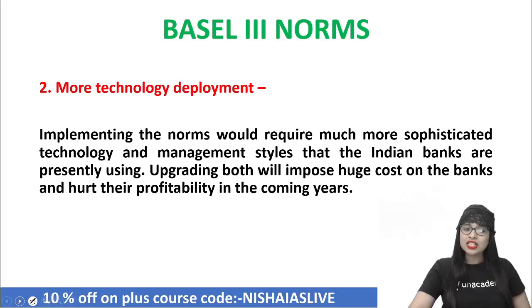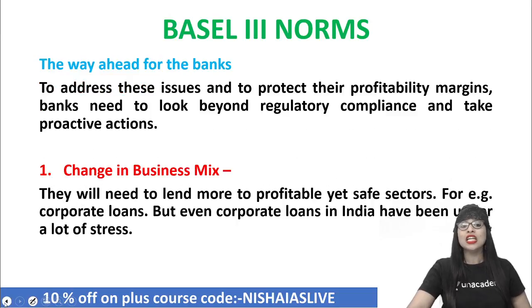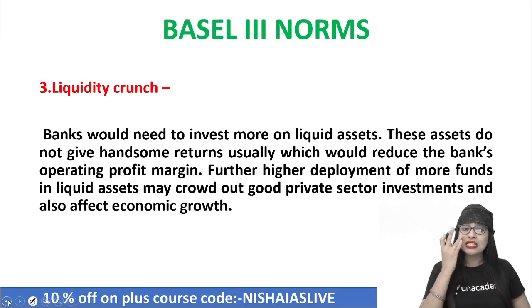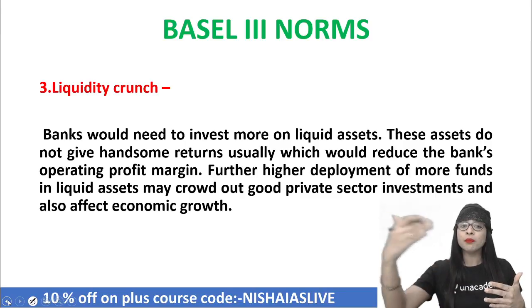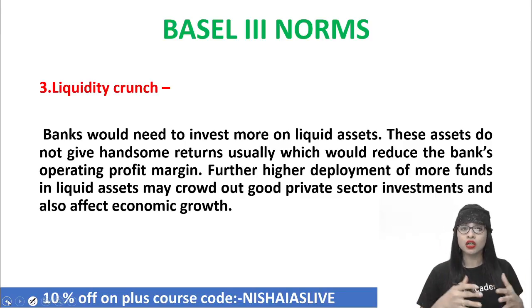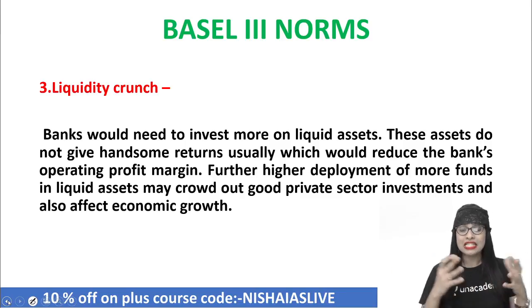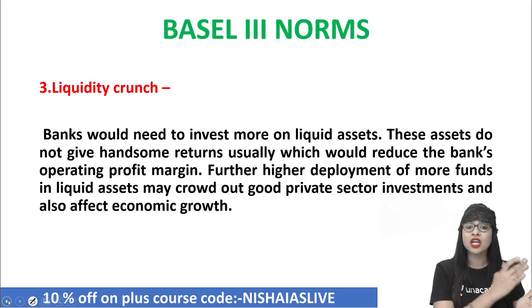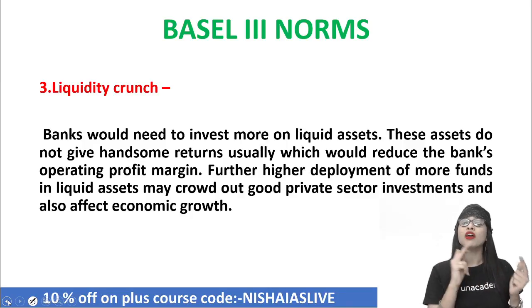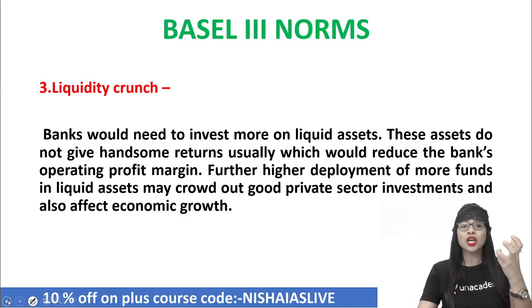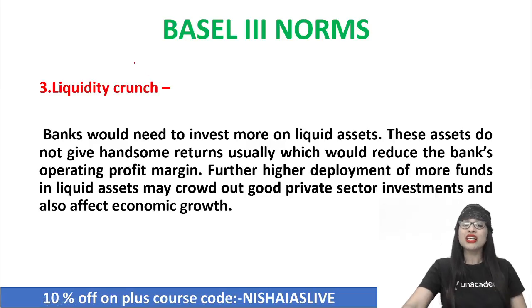Another reason why implementation took a long time for India is liquidity crunch. Banks would need to invest more in liquid assets to get returns, which will be profitable. But when there is higher deployment of funds in liquid assets — those which can easily be converted to money — it leads to crowding out of private sector investment. Automatically, economic growth gets affected because there is not much money supply — the liquidity crunch happens. So these are the basic challenges.